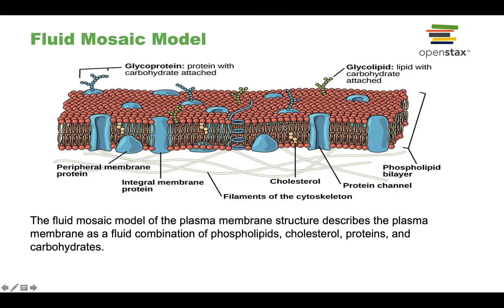There's a whole bunch of other stuff in here, which we're going to talk about in further detail. The model that scientists use to describe, in general, a plasma membrane is the fluid mosaic model. The 'fluid' refers to the fact that the plasma membrane is more like olive oil rather than butter.